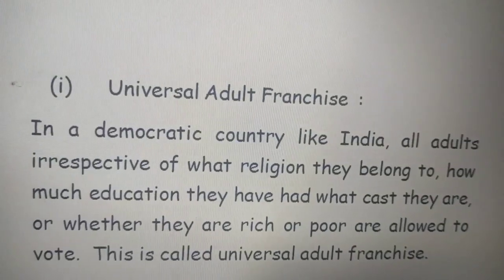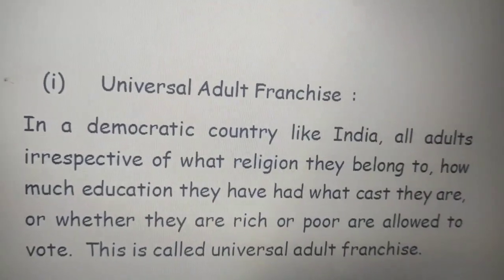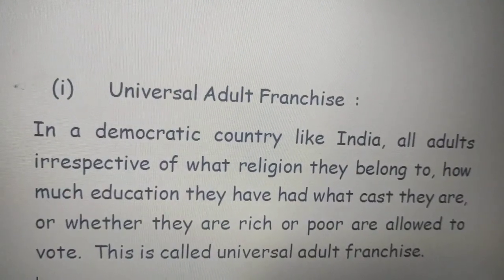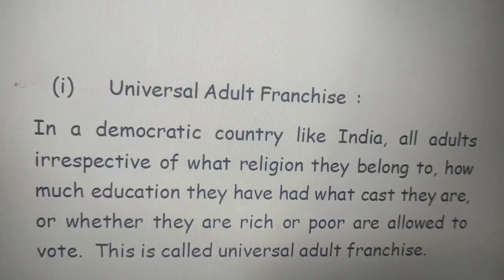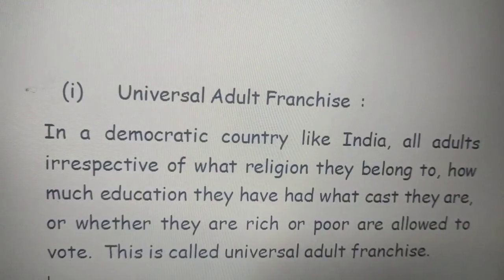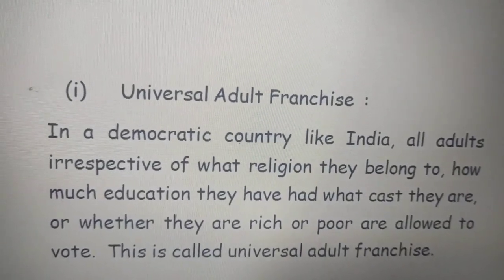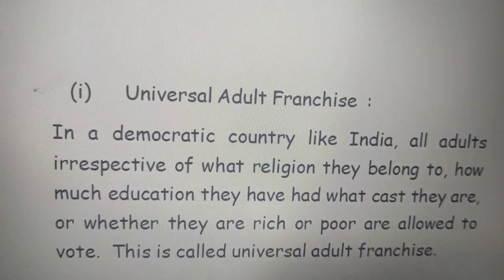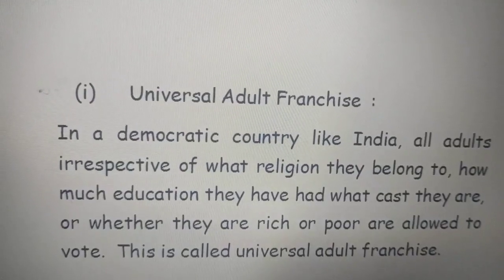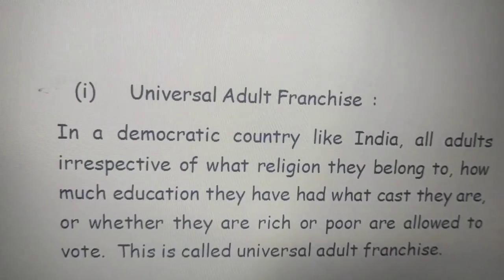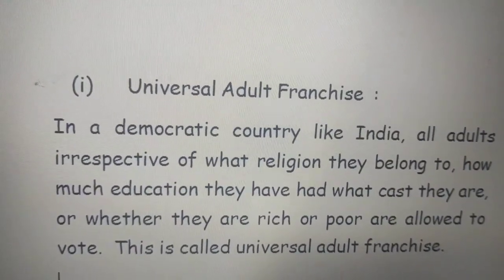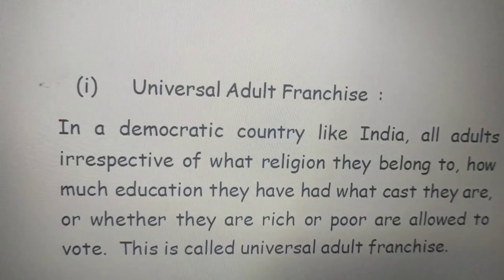We will study about equal right to vote. You must have studied about the topic universal adult franchise in your previous classes. It means that in a democratic country like India, all adults above the age of 18 years — no matter what religion they profess, what caste they belong to, how much education they have had, what social strata they belong to, or whether they are rich or poor — are allowed to vote. This is called universal adult franchise.